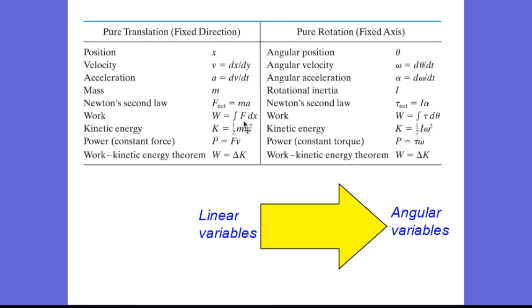Work is the integral of force with respect to displacement. Now, with rotational motion, work is the integral of torque with respect to angular displacement. Kinetic energy for linear motion, 1/2 mv squared. For angular motion, 1/2 I omega squared. Power for linear motion, force times velocity. Power for rotational motion, torque times omega. And the work kinetic energy theorem holds true for both. Just that 1/2 mv squared is our kinetic energy for translational motion and 1/2 I omega squared is our kinetic energy for rotational motion.